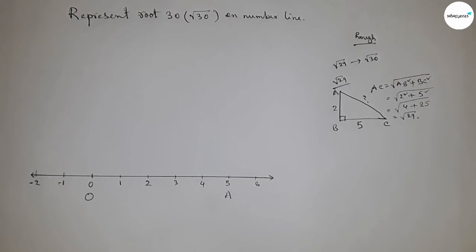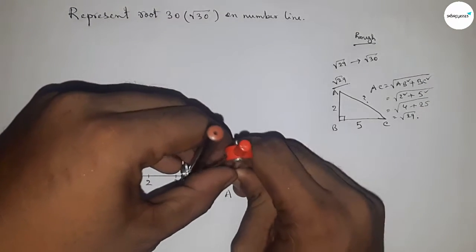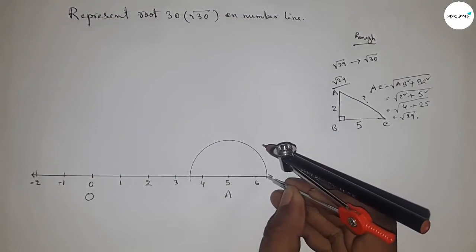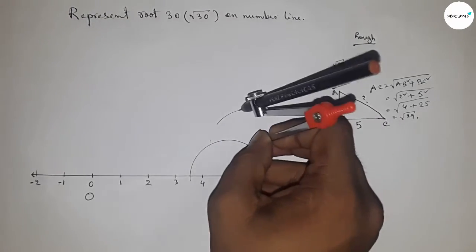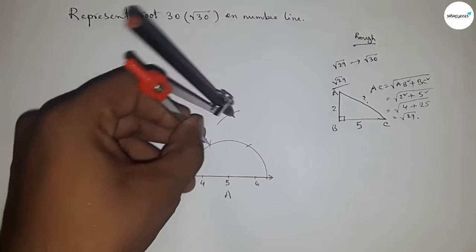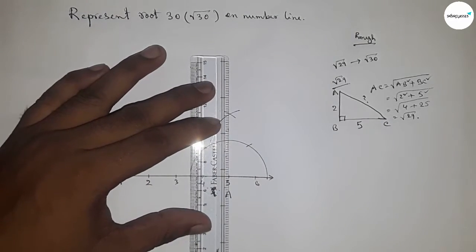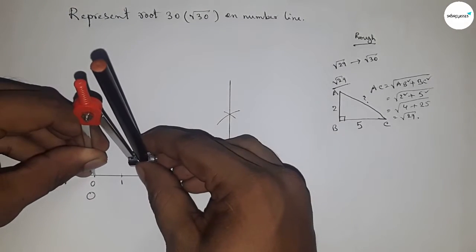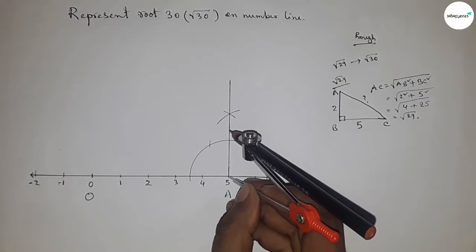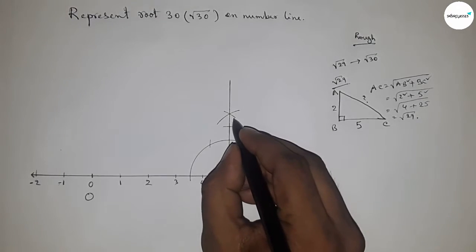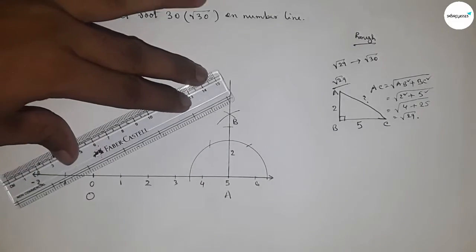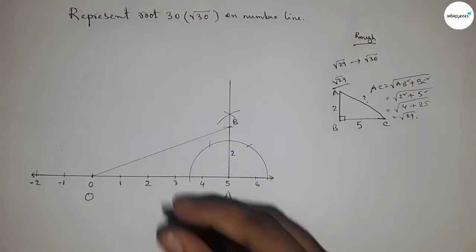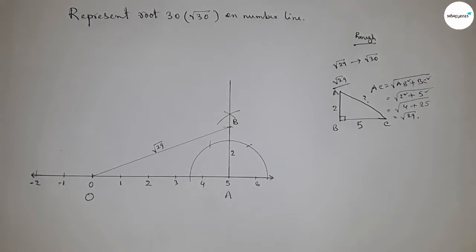This concept is applied between 0 and 5. O is the origin and A is at point 5. First, constructing a 90 degree angle at point A using compass — drawing arcs with the same length to get the perpendicular. Then taking two unit length by compass and marking point B, giving us OB equal to root 29 units.